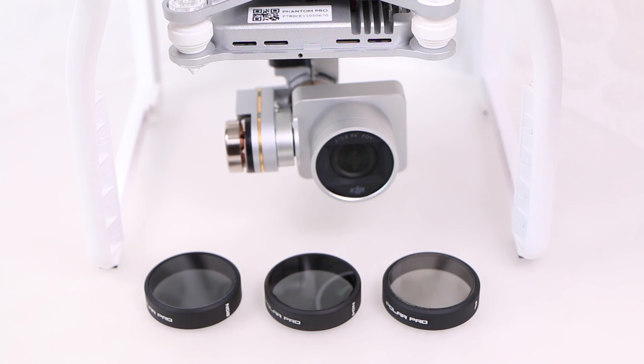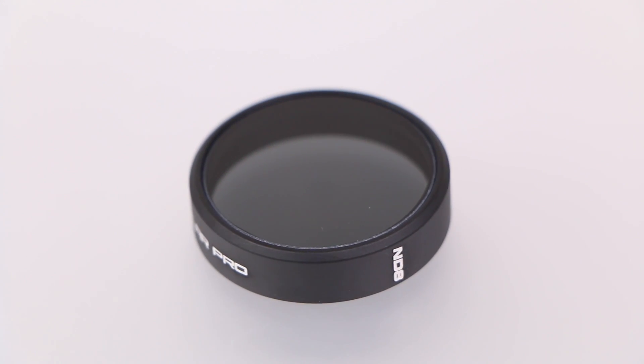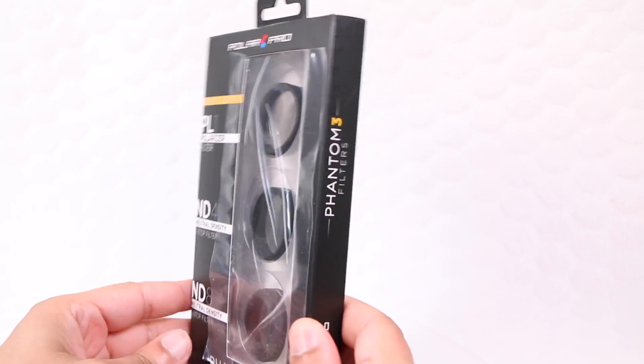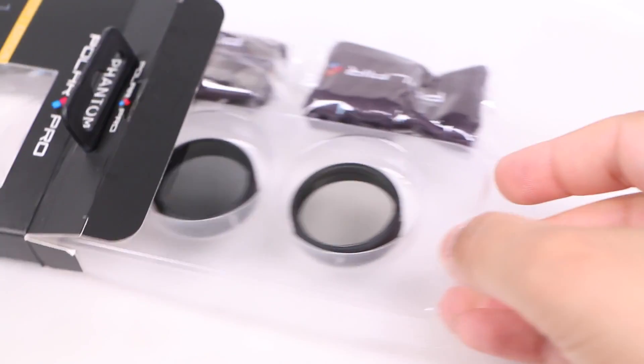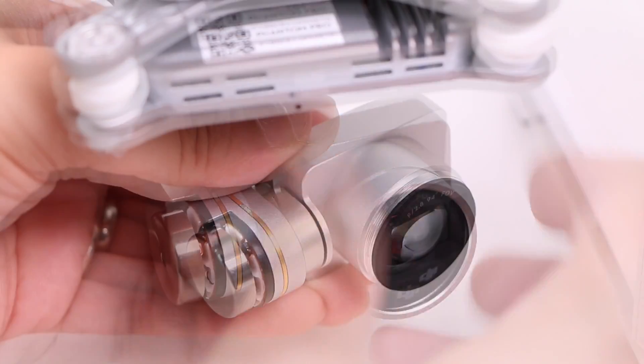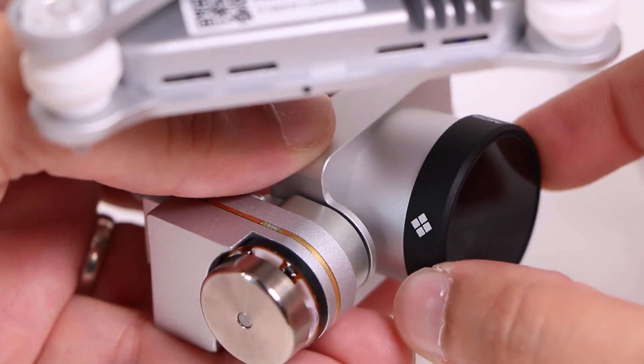Albeit at a slightly cheaper price point, especially considering users receive a three filter package. The removal of the stock UV filter also helps reduce the overall weight, which is never a bad thing when it comes to aerial drones.